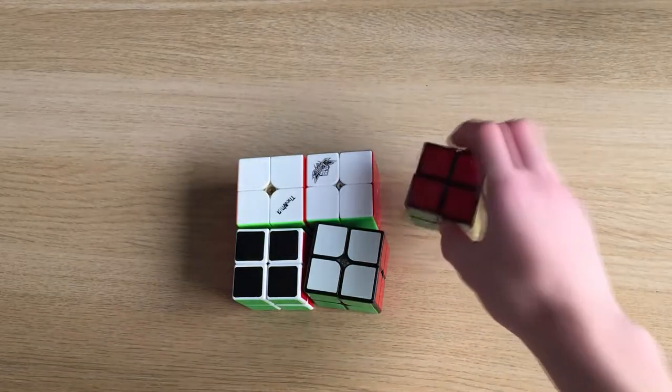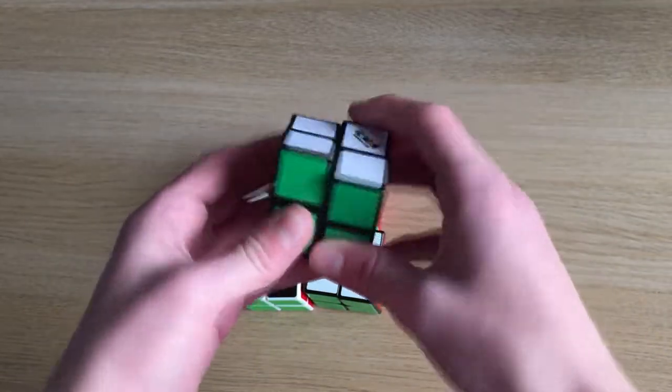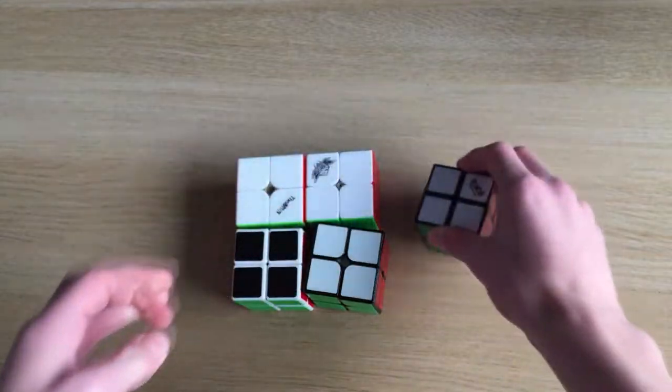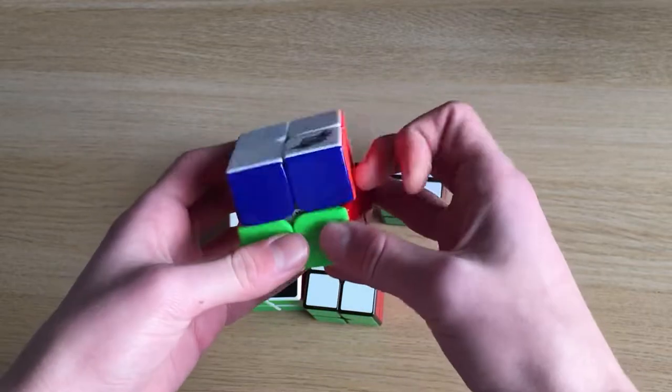I have five 2x2s. The first one, which is my first ever Rubik's Cube, is a Rubik's 2x2 that turns pretty badly. I have my QiYi One 2x2, my first ever 2x2 speed cube.